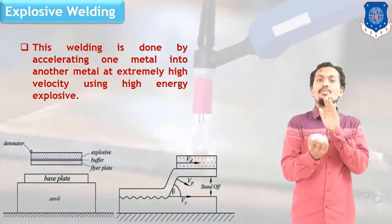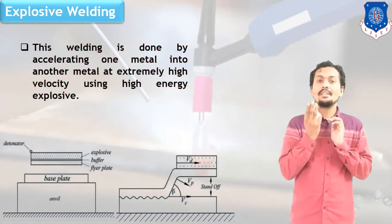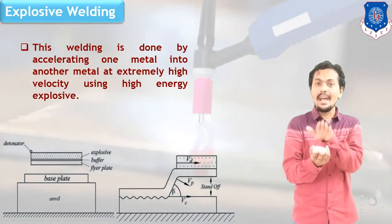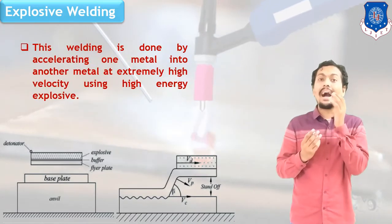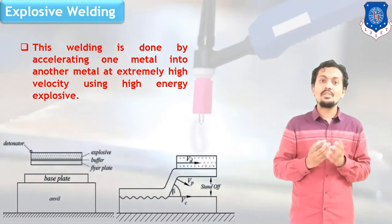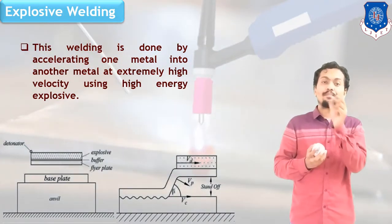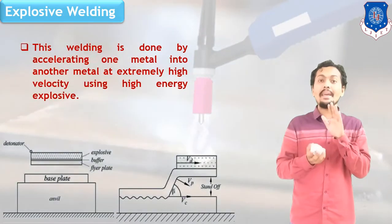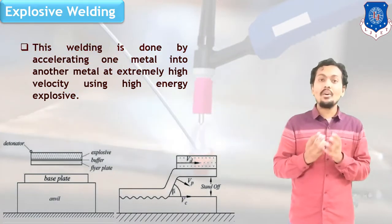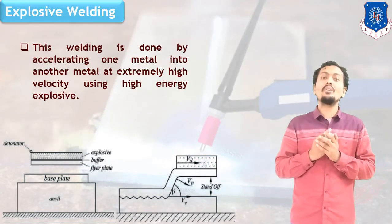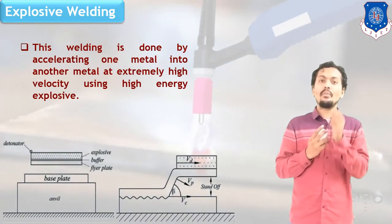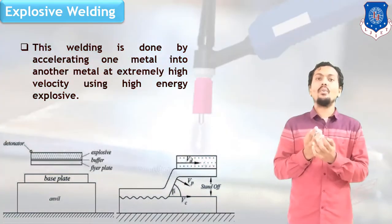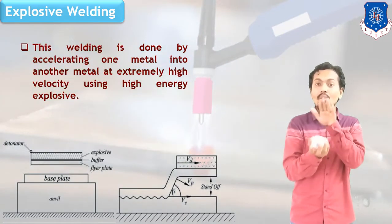So we have a flyer plate and a base plate. Our purpose is to join two plates — one is the base plate and another is the flyer plate. The flyer plate is striking on the base plate with a certain angle and very high velocity. With the help of this high velocity strike on the base plate, heat is generated. To make the flyer plate strike the base plate, detonators and explosive powder are used. With the help of detonators and explosive powders, we can generate high acceleration and striking force, and with this force we can weld two plates together.